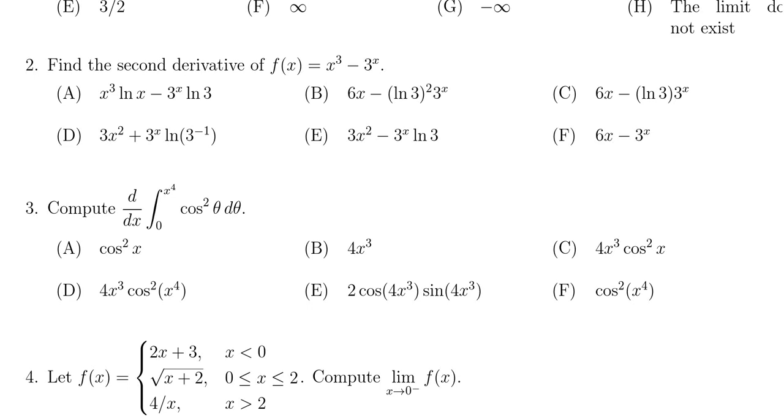To find the second derivative, we have to find the first derivative first by using usual rules of derivative calculations. The derivative of x³ gives us 3x². The derivative of 3^x gives us 3^x times the natural log of 3. That's our first derivative.